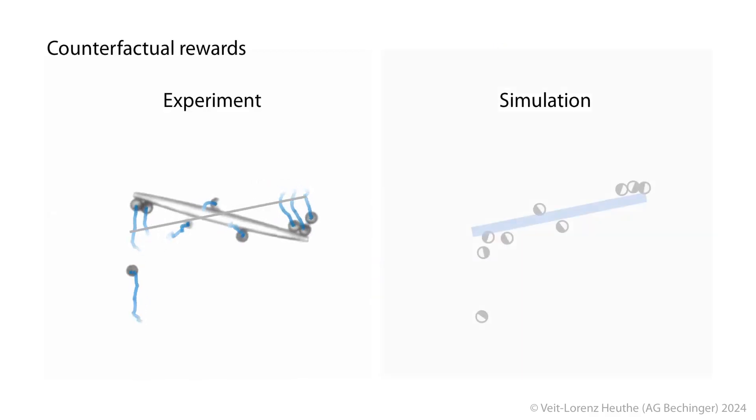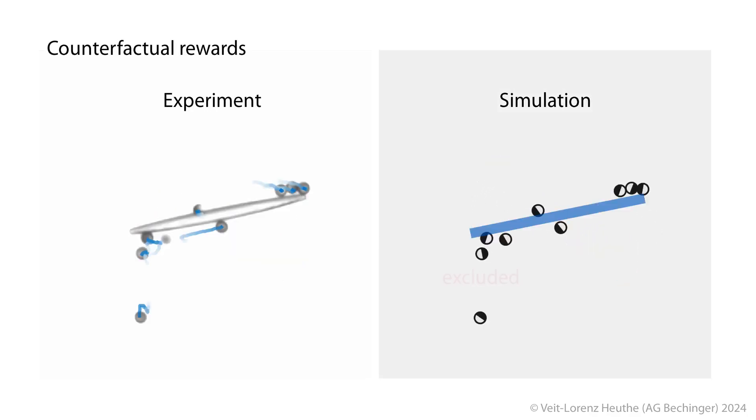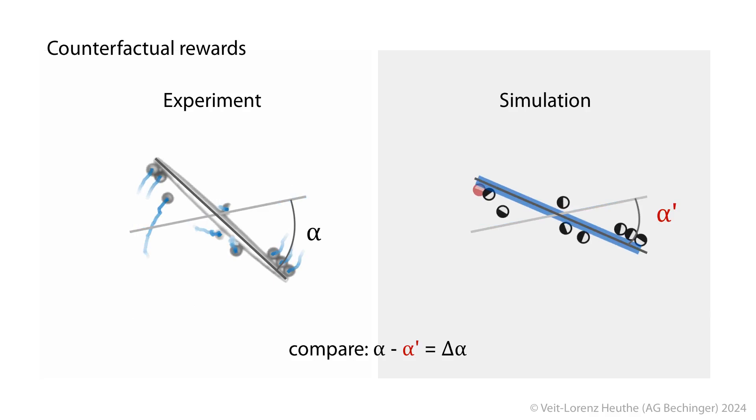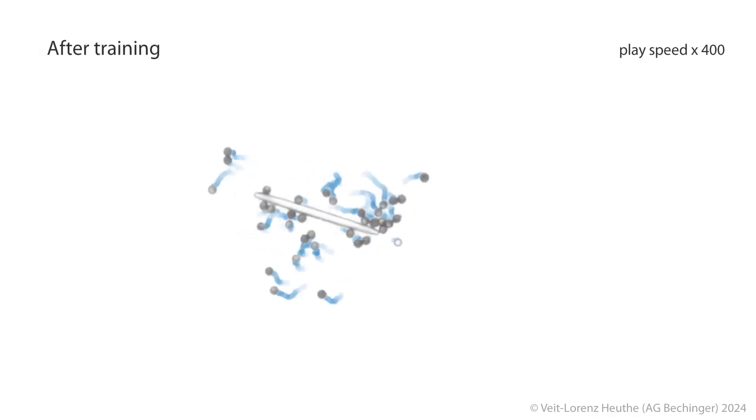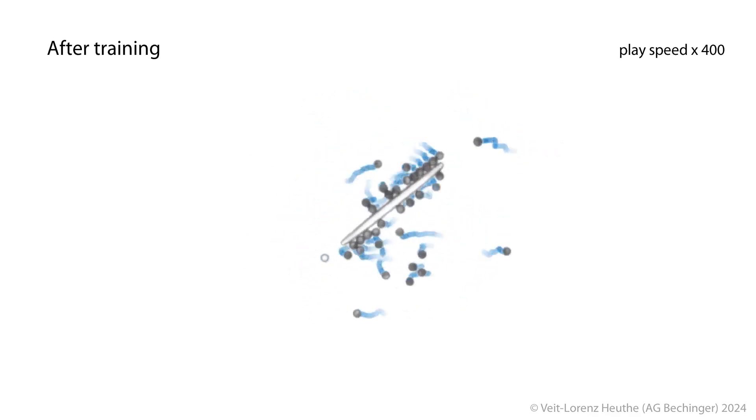After each action of the robots in experiment, the same time step is simulated again, but with the exclusion of one micro-robot. By comparing the performance of the whole swarm with and without this robot, we can assess how much this particular robot contributed to the overall performance. This special rewarding scheme increases the efficiency of the micro-robot swarm and speeds up the training process.